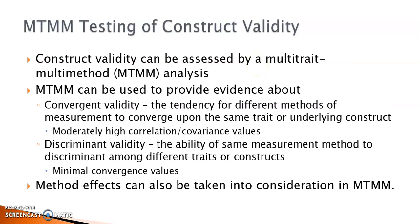I'm going to introduce you to multi-trait multi-method analysis as a statistical technique to assess construct validity. MTMM can be used to provide evidence about convergent validity and discriminant validity. In the context of MTMM, evidence about convergent validity is provided by moderately high correlation or covariance values when different measurement methods converge upon the same trait or underlying construct. Evidence for discriminant validity is based on minimal convergence values when one same measurement method is used to measure different traits or constructs.